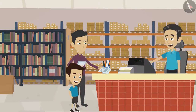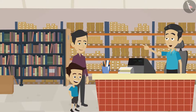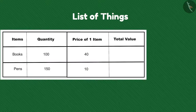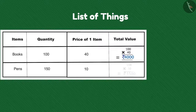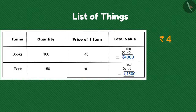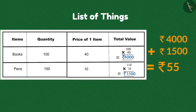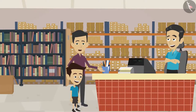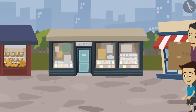How are you, Mohan? I want these things to open my shop, tell me the cost of these things. Brother Ramu, one book costs rupees 40 and one pen costs rupees 10. Look Sham, the shopkeeper told us the cost of one item, now can you tell me the total cost? The cost of books is 40 into 100, that is 4000 rupees. The cost of pens is 10 into 150, that is 1500 rupees. The total cost is 4000 plus 1500, that is 5500 rupees.